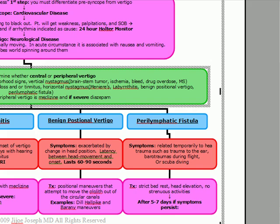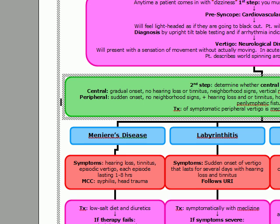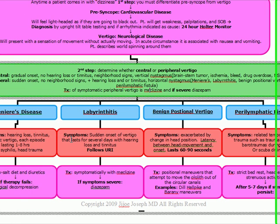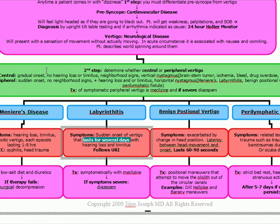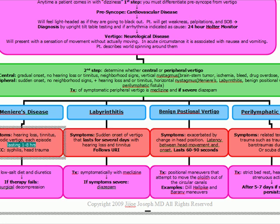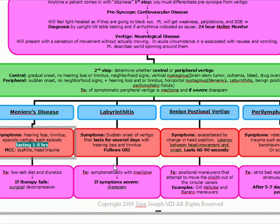Meniere's disease presents with episodic vertigo, hearing loss, tinnitus, and a feeling of fullness in the ear. Episodes last one to eight hours. The most common causes are syphilis and head trauma. Treatment is low-salt diet and diuretics; if therapy fails, surgical decompression. Labyrinthitis presents with sudden onset of vertigo lasting several days, and it follows a URI — think 'itis' meaning infection. Treatment is symptomatic meclizine, escalating to diazepam if severe.